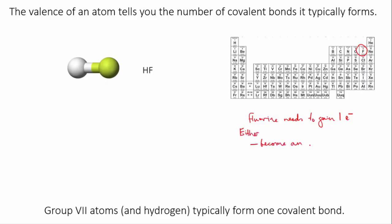One way fluorine can gain an extra electron is by becoming an ion, and this is what happens if it reacts with a metal. But if it's pairing with another non-metal like hydrogen, it does it by covalent bonding.